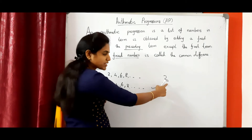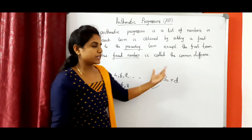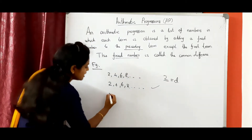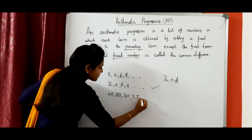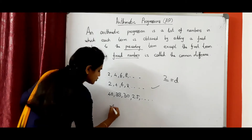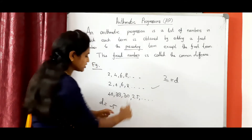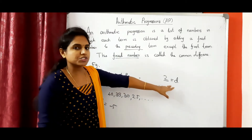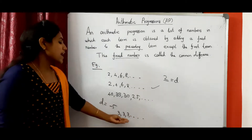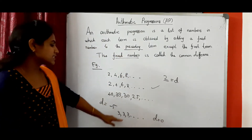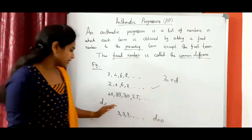This fixed number — here what is the fixed number? 2 is the fixed number. This fixed number is called the common difference D. The common difference is sometimes positive, negative, or zero. Here the common difference is positive. Suppose negative — I will give one example. Here: 40, 35, 30, 25, etc. Here what is the common difference? It is minus 5. D equals minus 5. We need to add minus 5 to each term: 40 minus 5 is 35, 35 minus 5 is 30, 30 minus 5 is 25. So here common difference is negative. The first example common difference was positive. Next, the common difference can also be zero. For example: 3, 3, 3, 3, etc. This is also an AP. Here common difference D equals 0. Each term is equal, therefore the common difference is 0. So the common difference can be positive, negative, or zero.